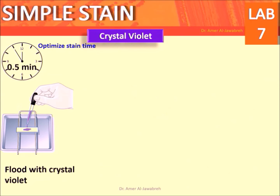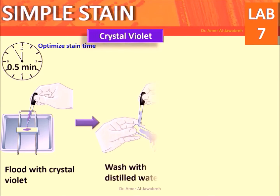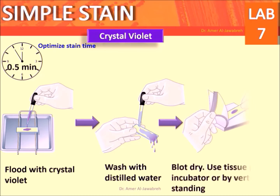Crystal violet procedure: flood with crystal violet for half a minute. Wash with distilled water. Blot dry using tissue paper, an incubator, or by vertical standing.